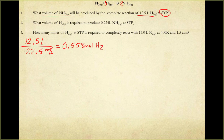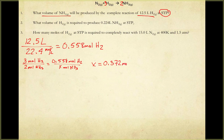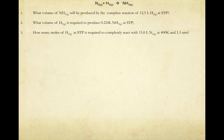Using the balanced equation, I set up a mole ratio: 3 moles of H2 produce 2 moles of NH3. So 0.558 moles of H2 will produce x moles of NH3. Solving for x gives 0.372 moles of NH3. Then, converting back to volume since we're at STP, I multiply by molar volume (22.4 L/mol) and find that this reaction produces 8.33 liters of NH3 gas.